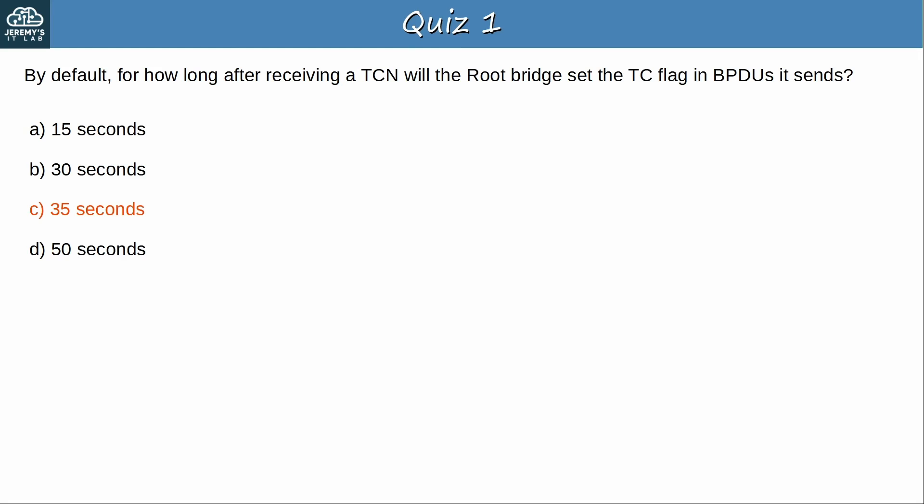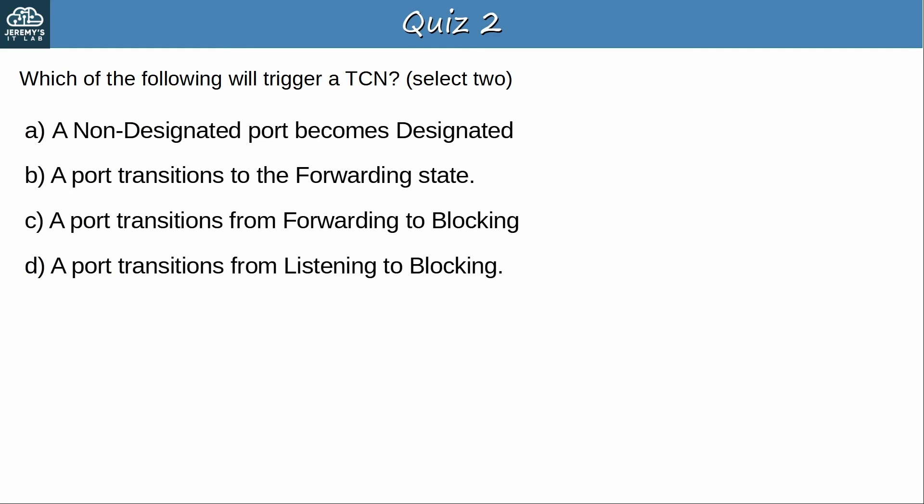Question 2: Which of the following will trigger a TCN? Select 2. The answers are B and C. A port transitioning to the forwarding state will trigger a TCN. And so will a forwarding port transitioning to the blocking state. Additionally, a port in the learning state transitioning to blocking will trigger a TCN. However, a port transitioning from listening to blocking will not, so D is incorrect. A is incorrect because the act of changing port roles from non-designated to designated does not trigger a TCN — it will trigger a TCN when it transitions to the forwarding state, but that will be 30 seconds after.